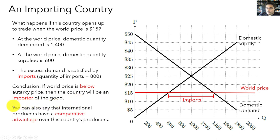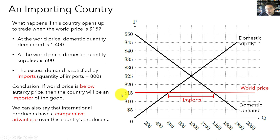We can also say that the international producers here have a comparative advantage over this country's domestic producers. In order for this country's producers to satisfy all of the domestic demand, their marginal cost would be higher than international producers. Remember, in equilibrium price equals marginal cost, so the world price is effectively the marginal cost for international producers. Since the marginal cost of international producers is lower, they have a comparative advantage, and therefore this country is going to be a net importer of the good.